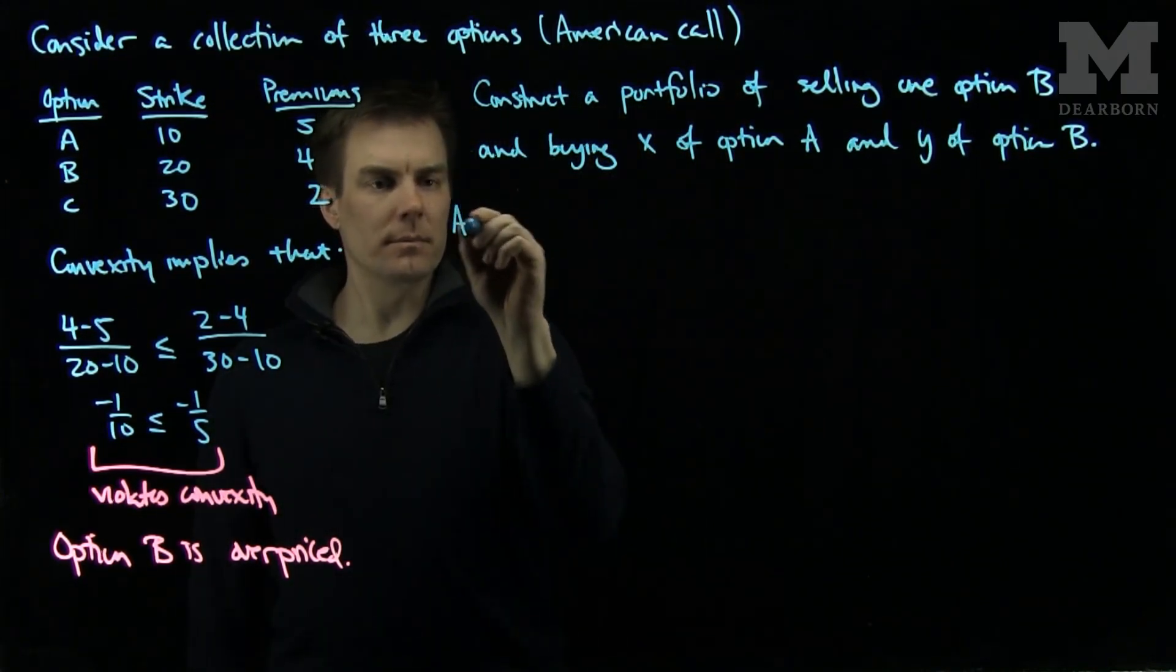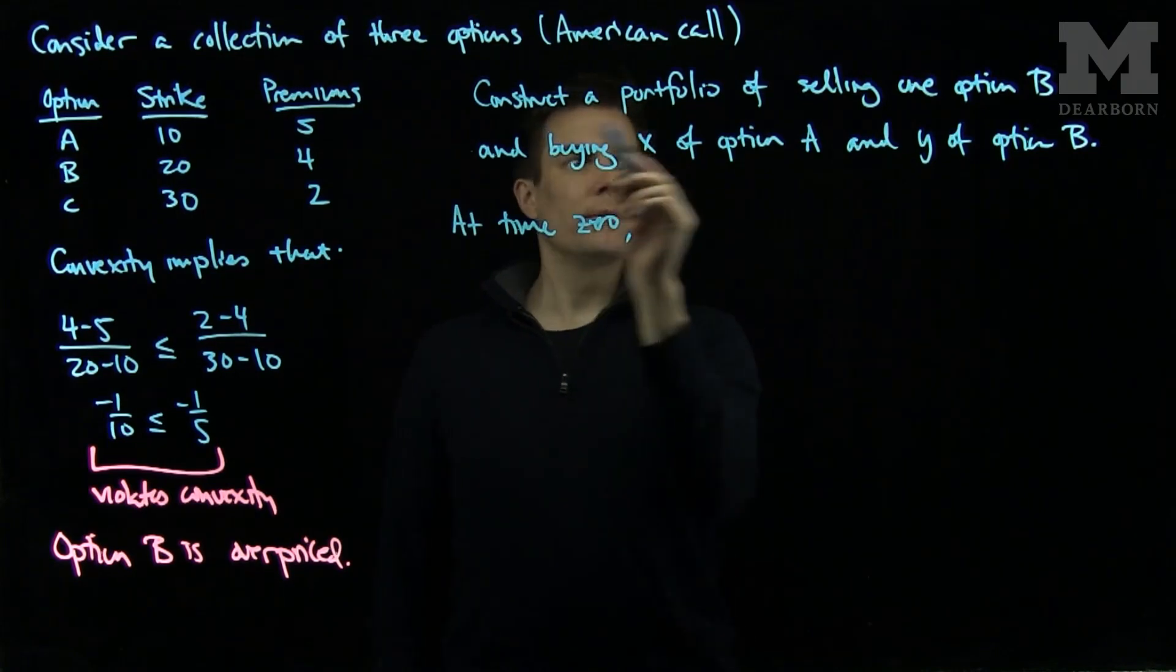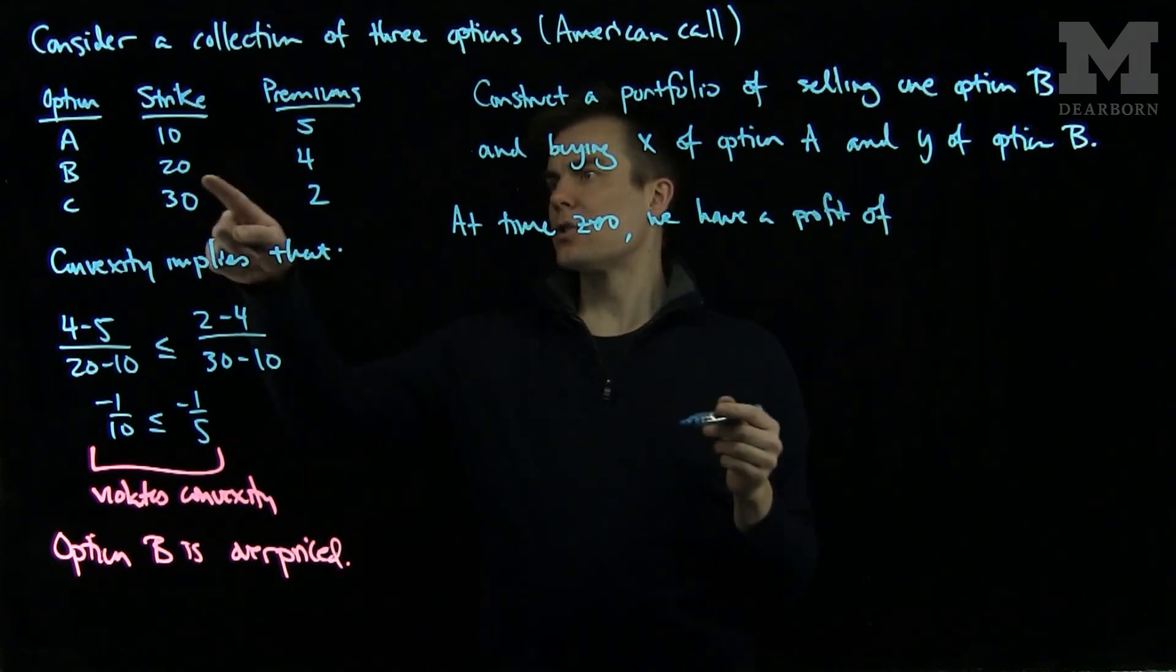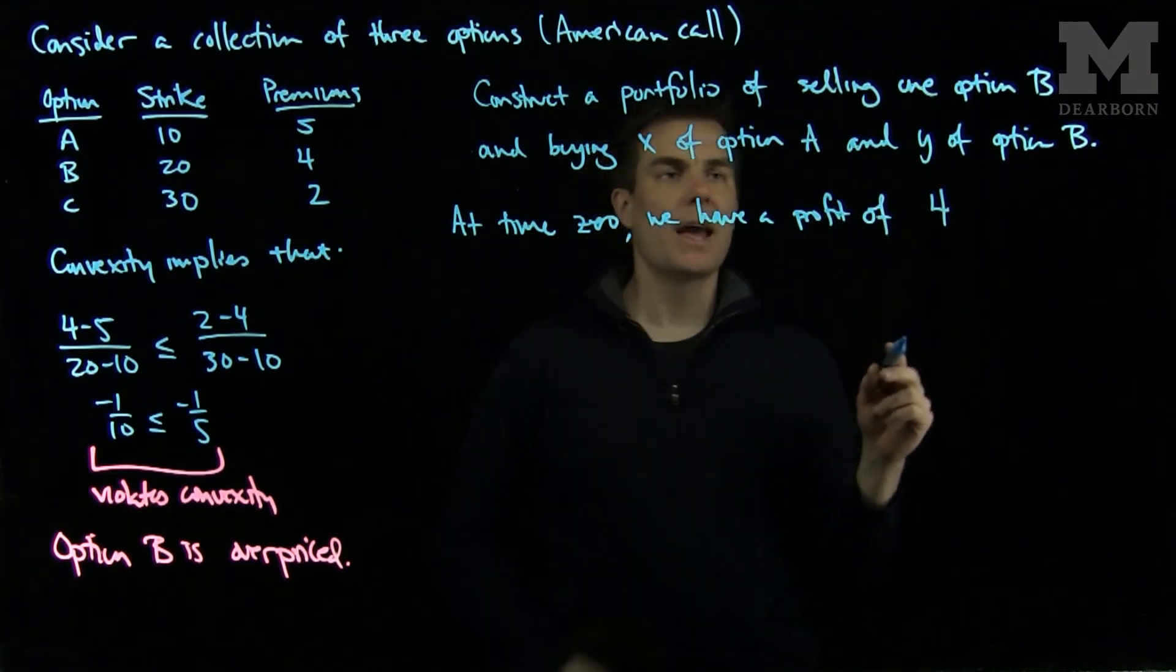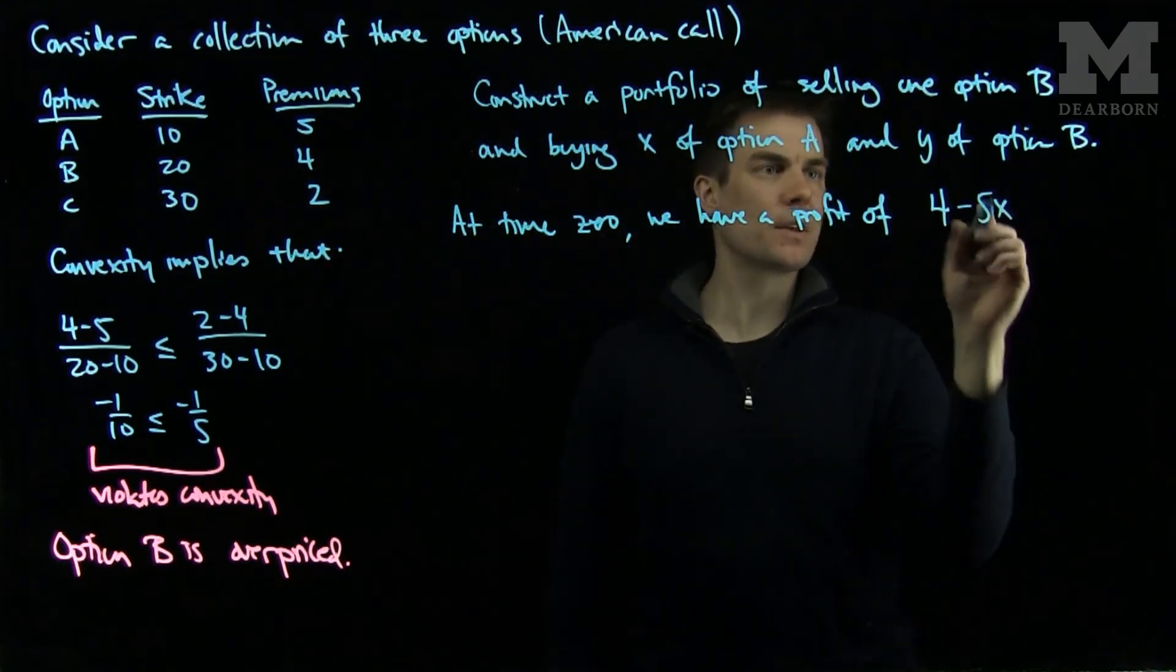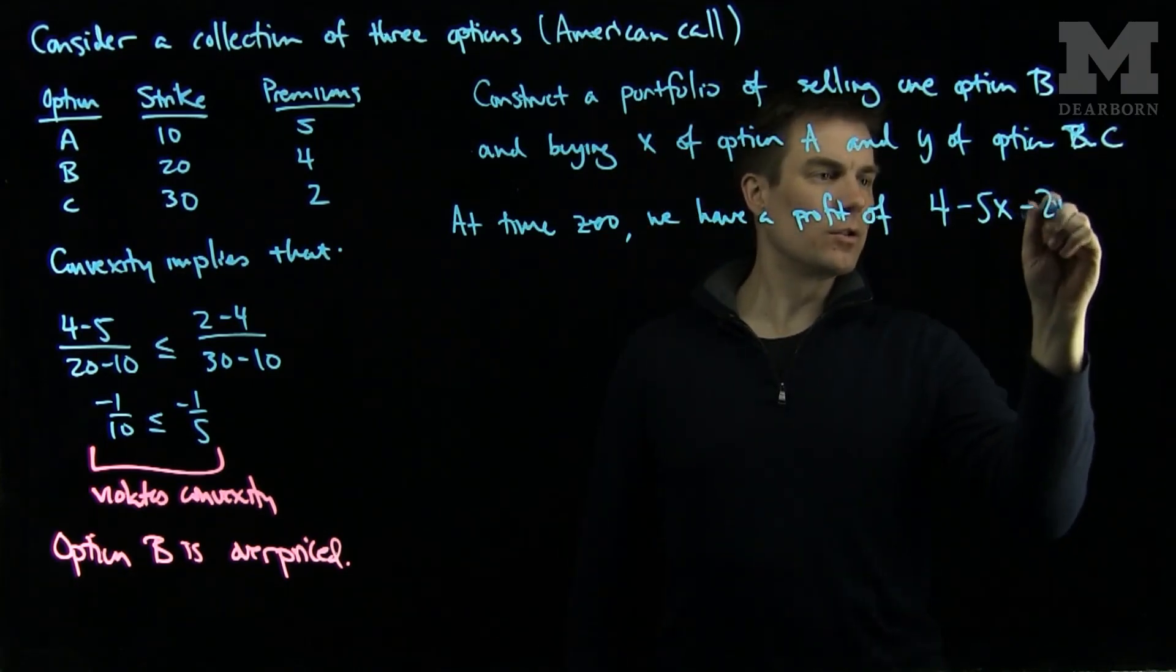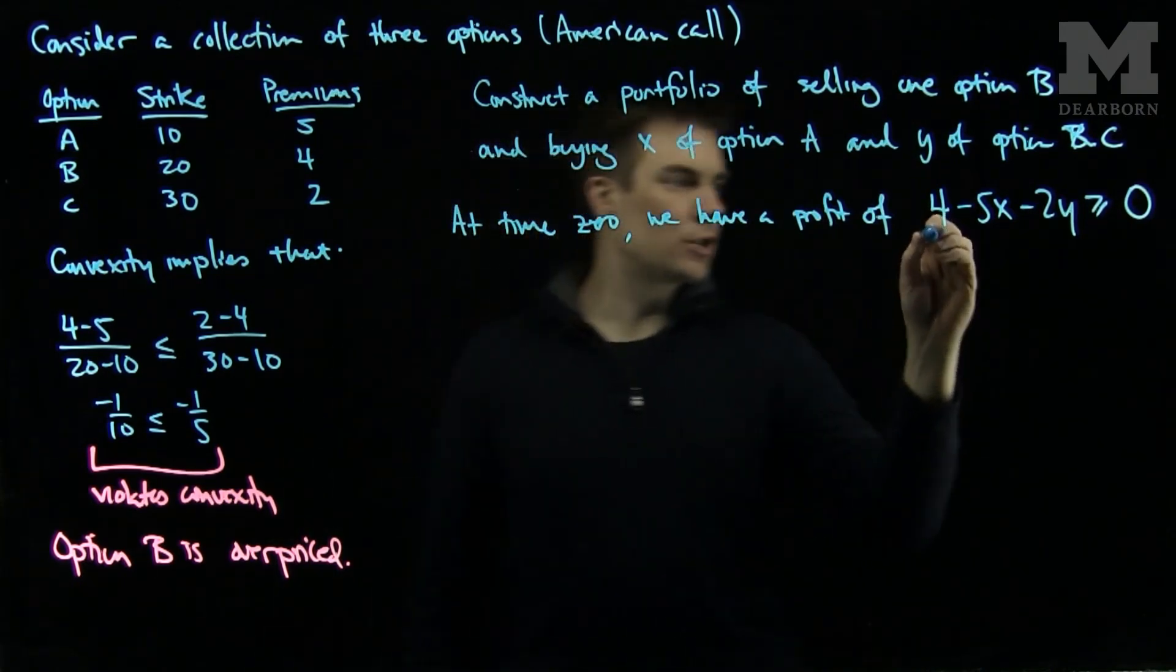Then at time zero, we have the following profit. We have sold one option B, so we have the premium of 4. And we have purchased option A and option C, so I'll have minus 5x and minus 2y. I need this, 4 minus 5x minus 2y, to be bigger than or equal to 0. That's the first condition we have.